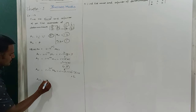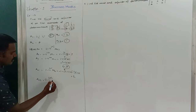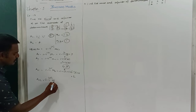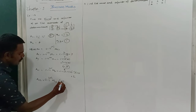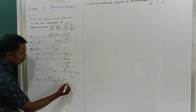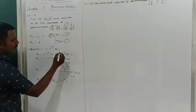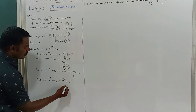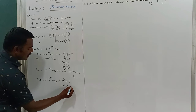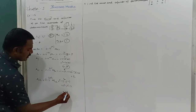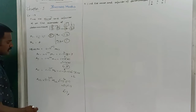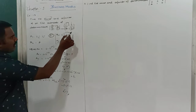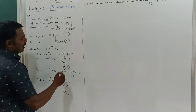And A22 = (-1)^(2+2) × M22 = (-1)^4 × 1 = +1 × 1 = 1. This is the cofactor of the element 3.